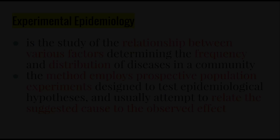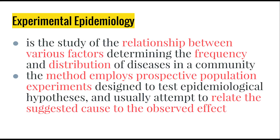Experimental epidemiology is the study of the relationship between various factors that determine the frequency and distribution of diseases in the community. This method employs prospective population experiments designed to test the hypotheses that have come from the other two types of studies, and usually attempts to relate the suggested cause to the observed effect. Basically, they carry out an experiment on a population to see if, by controlling certain risk factors, the number of diseases either increases or decreases, with the ultimate goal of finding the cause.